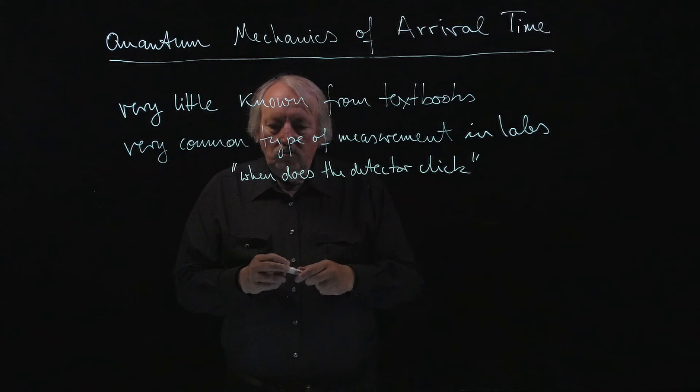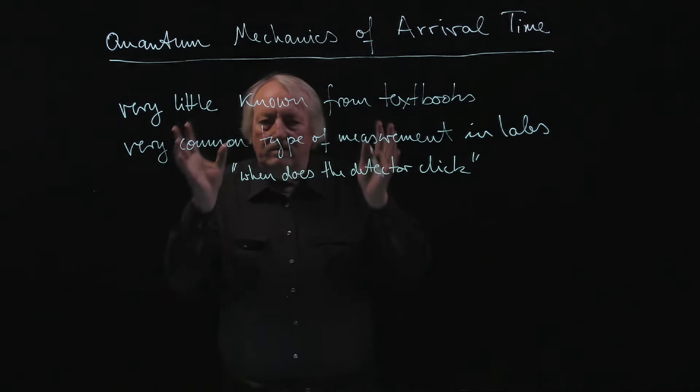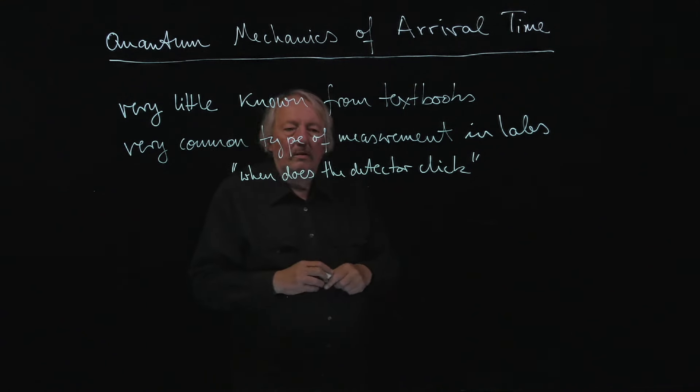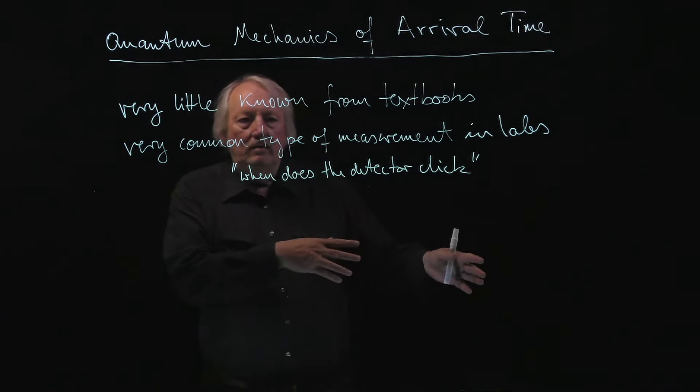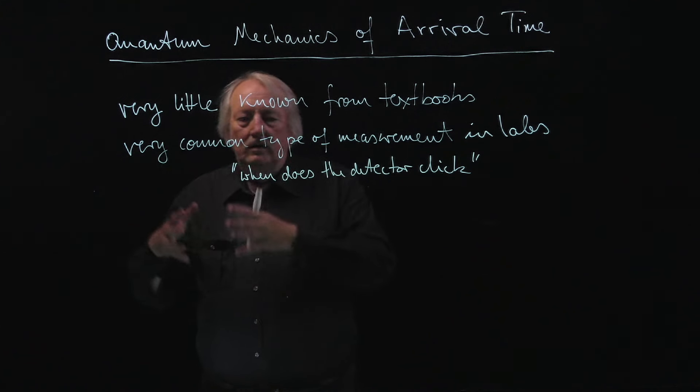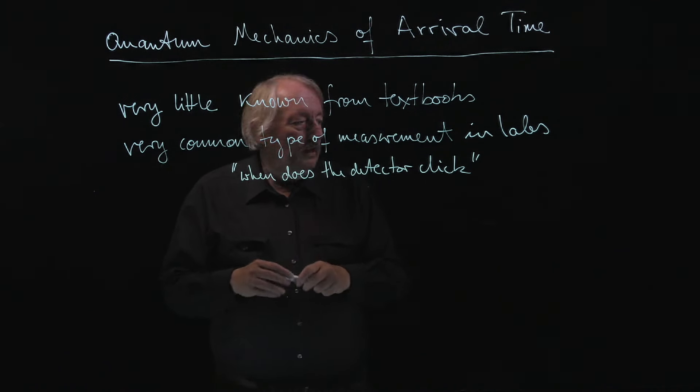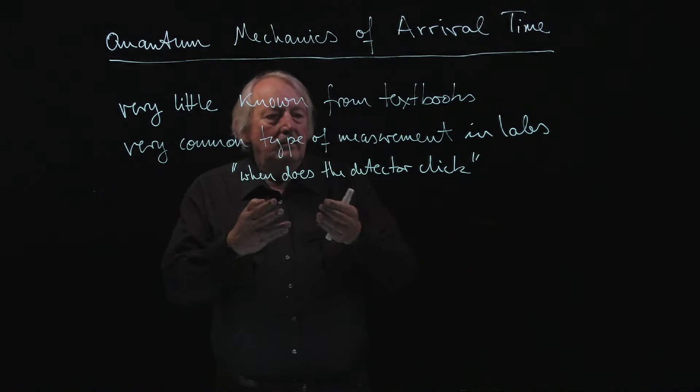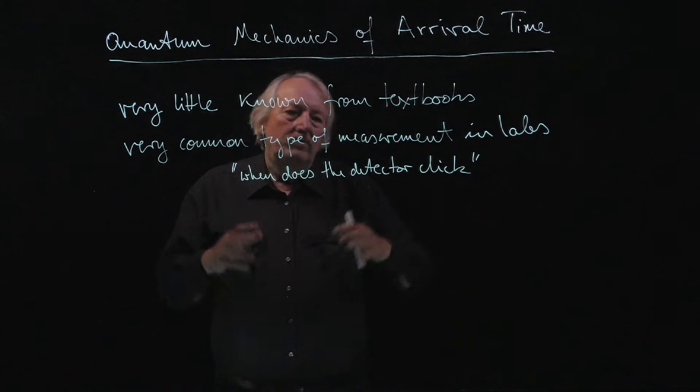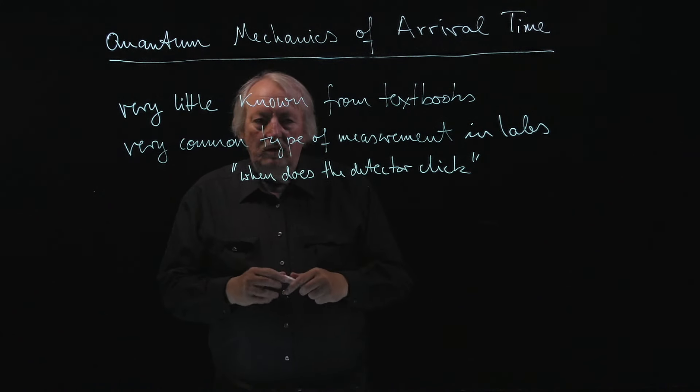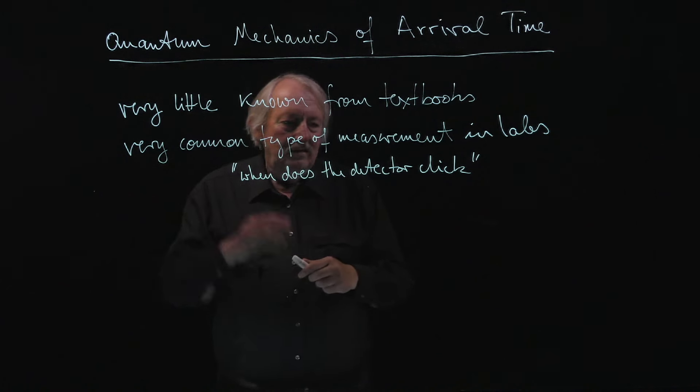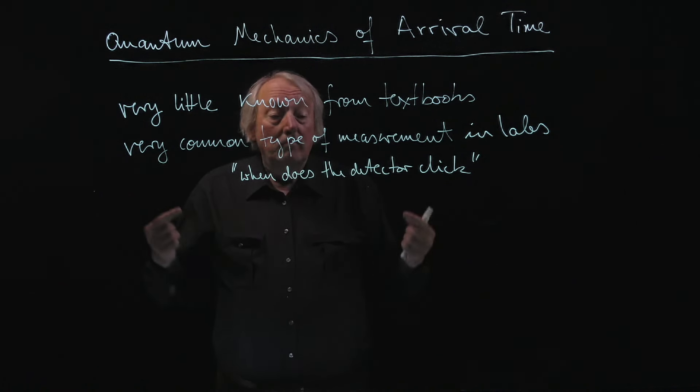And then you go to your theory books, and there is this general claim that whatever can be measured in a lab is described by a quantum mechanical observable, some pretty well understood kind of mathematical object. Well, if you come up with just any old Hermitian operator, nobody knows how to measure that. So in that direction it's not so clear.